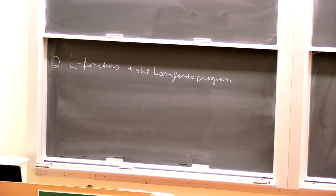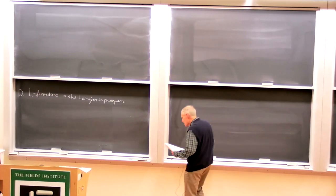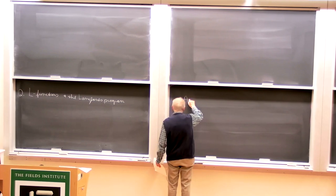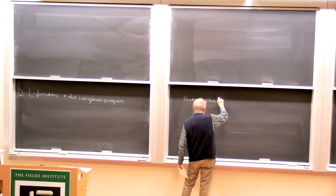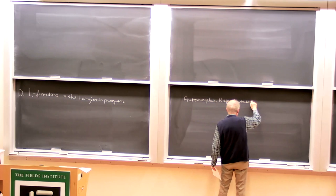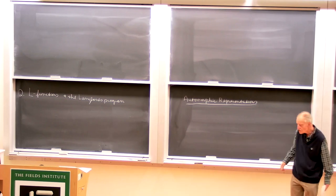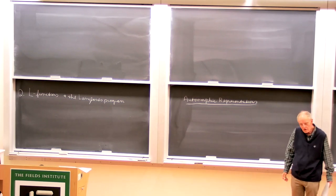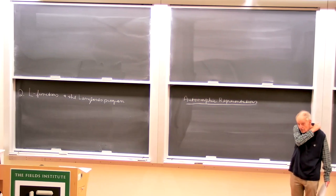The Langlands program is based on something that was not named in that 1969 Bonn article — the name only came later. But the name was 'automorphic representations.' So the notion of an automorphic form is familiar from the subject of modular forms, and there is a difference between a modular form, an automorphic form, and an automorphic representation.